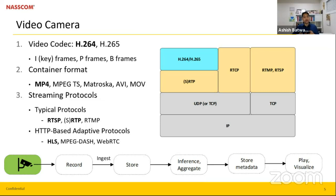HLS, or HTTP Live Streaming, is mostly used for live streaming and supports media servers, media players, web browsers, and mobile devices. It supports adaptive bitrate streaming and is the most widely used protocol for live streaming. It was started by Apple, prefers quality over latency, and is a more secure protocol. However, one downside is that it is not for ingestion — it is only for playing or streaming.